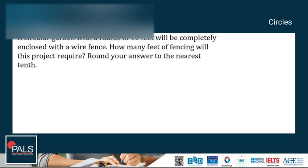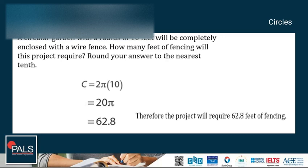The distance completely around the circular garden is the circumference, so we will be using the circumference formula. By plugging in the given, we have C = 2π × 10. 10 is the radius. Now, solving, we've got 20π, and the answer is 62.8. So therefore, the project will require 62.8 feet of fencing.